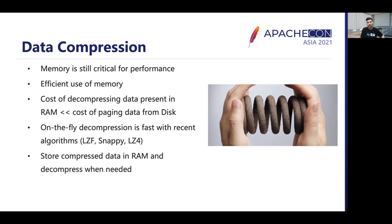While memory mapping increased our cost effectiveness, memory is still a key component for performance. We benchmarked various compression techniques and found that the cost of decompressing data in RAM is less compared to paging data from disk. On-the-fly compression is fast and efficient with recent algorithms. We started storing compressed data in RAM and decompress it only while processing a query.